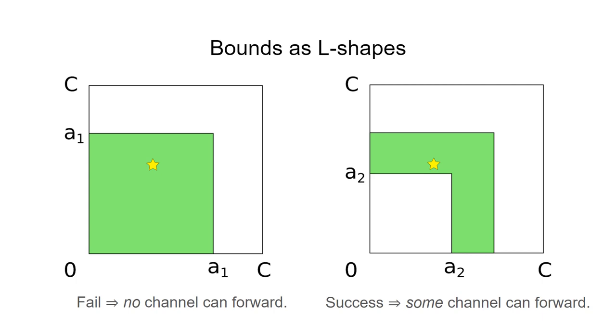So consider first the picture on the left. The attacker sends a probe with the amount A1, and this probe fails, which means that Alice was unable to forward the probe to Bob. This means that the balances in all the channels between Alice and Bob on Alice's side were lower than the probe amount.